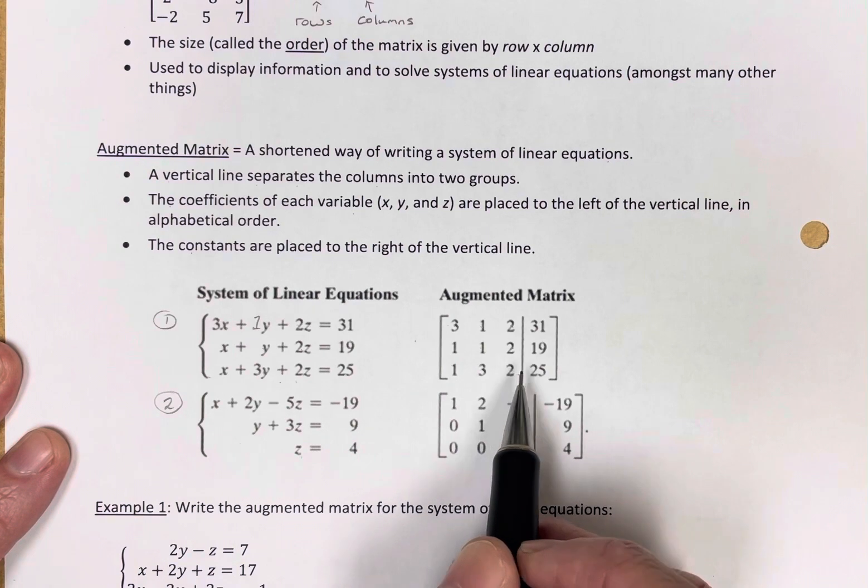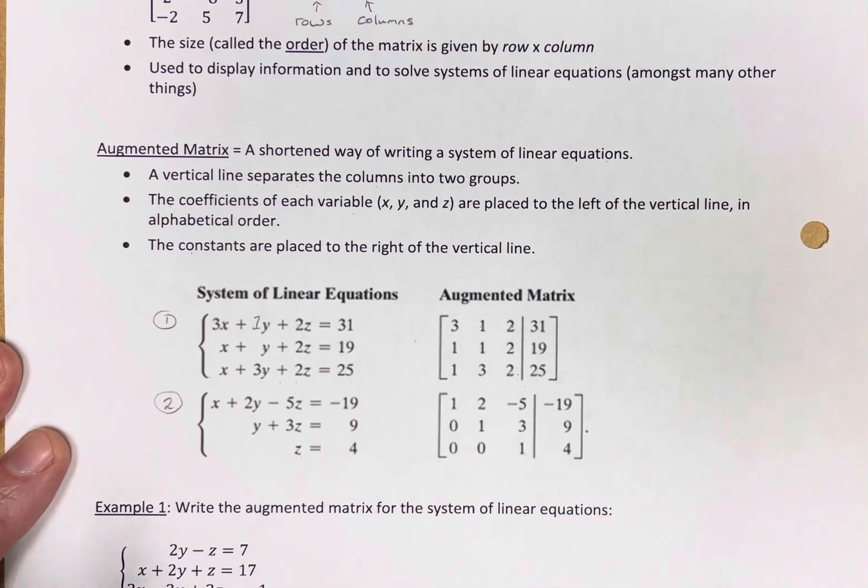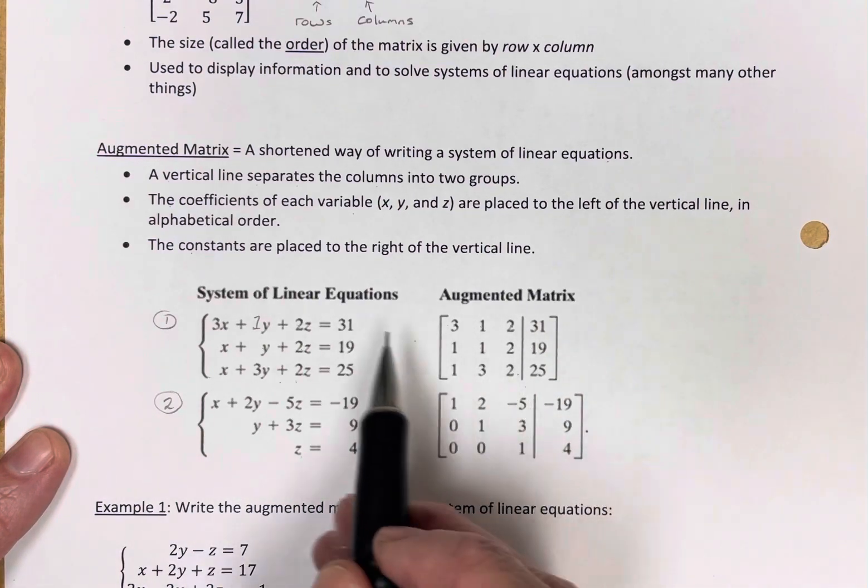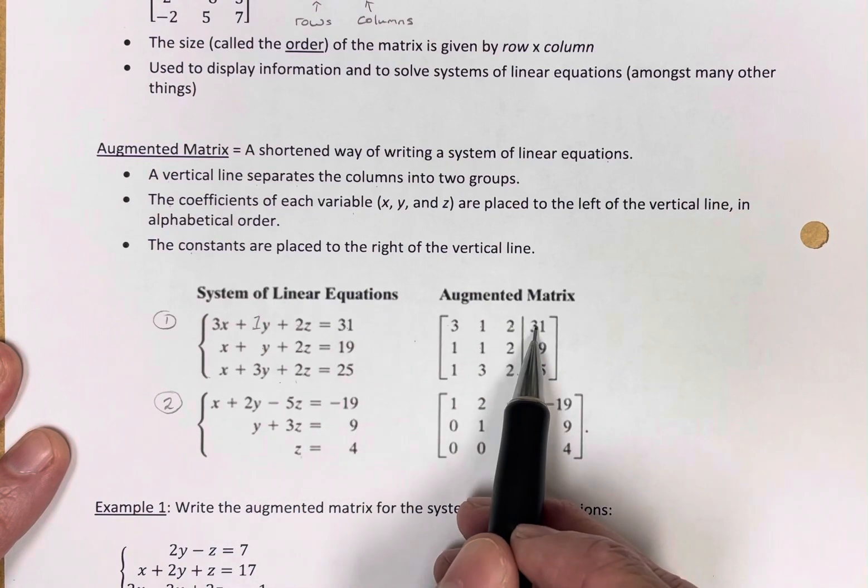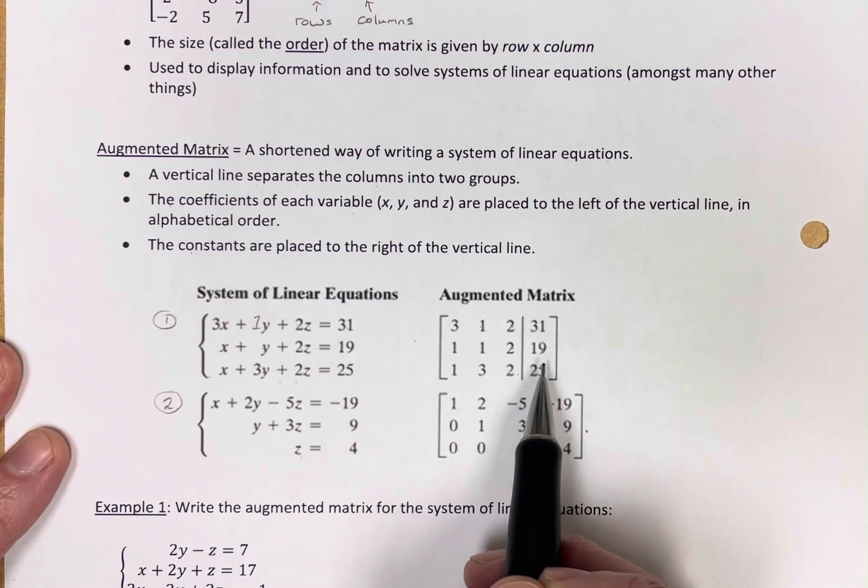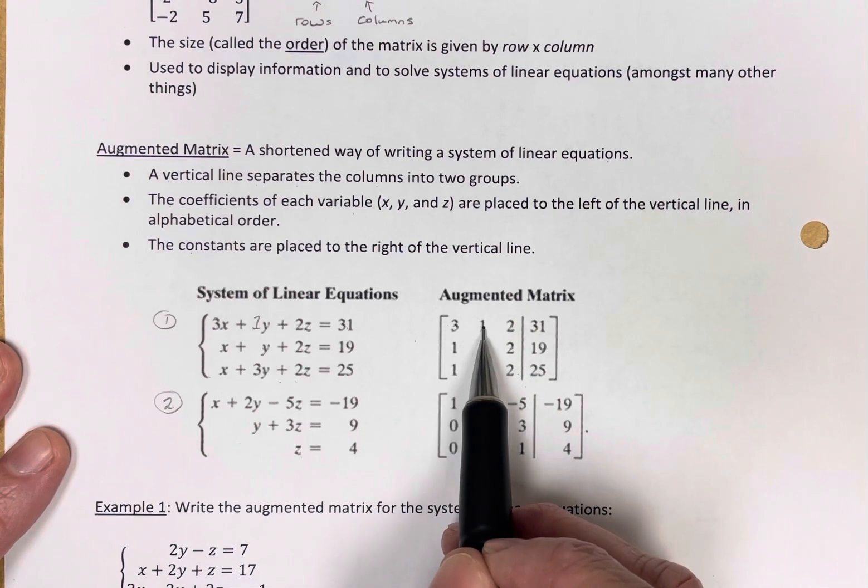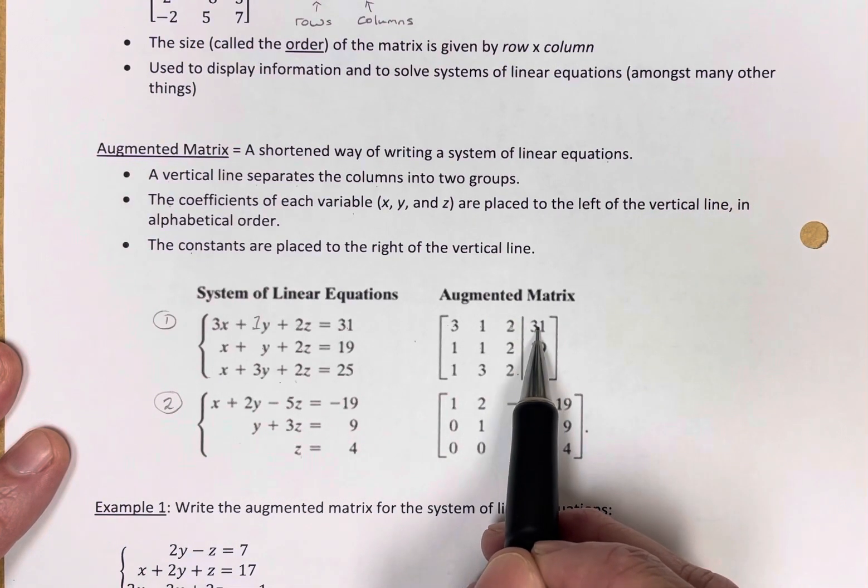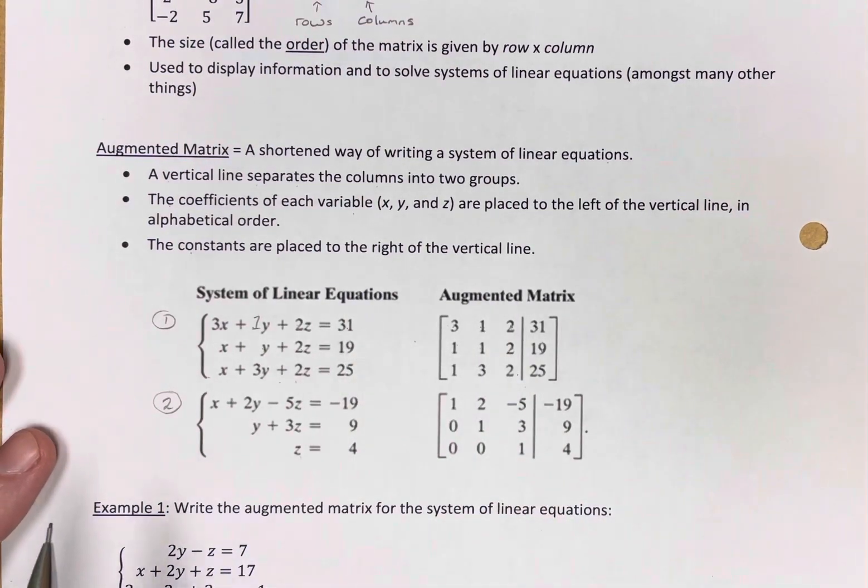The corresponding constants go to the right of the vertical line. Here's my vertical line. The first equation here has a 31 as its constant, so there's your 31, 19, and 25. So you can read this, 3x plus y plus 2z equals 31 as you go across left to right. That's the augmented matrix.